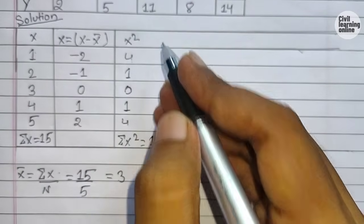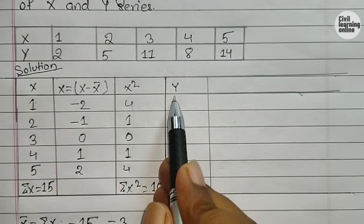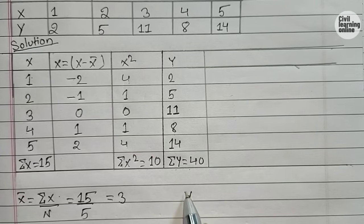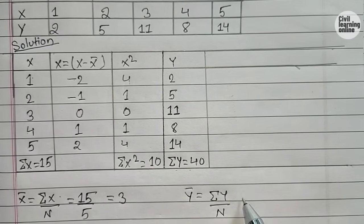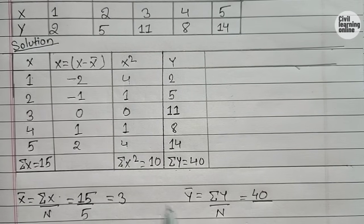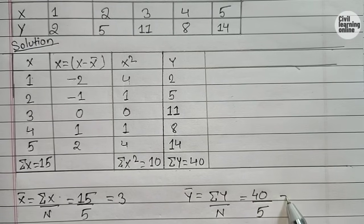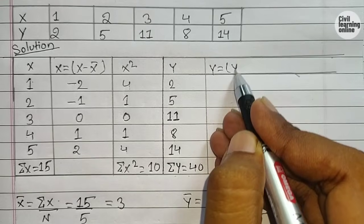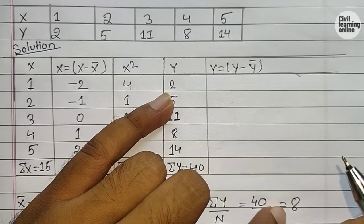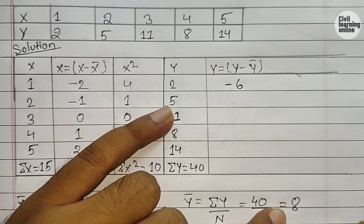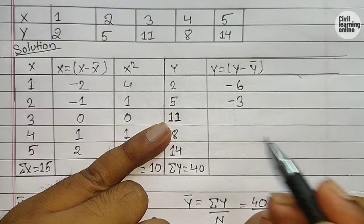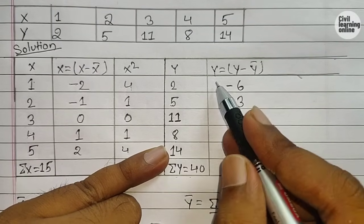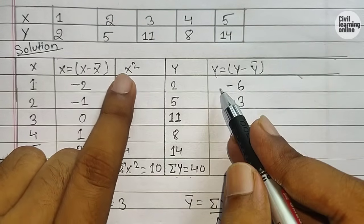After calculating x squared, now for the elements of y. The value of summation y has been computed. Calculate the mean of y: ȳ equals summation y divided by n, which gives 40 divided by 5, so ȳ equals 8. Now calculate the new value of y: y equals y minus ȳ. Subtracting: 2 minus 8 equals minus 6, 5 minus 8 equals minus 3, 11 minus 8 equals 3, 8 minus 8 equals 0, and 14 minus 8 equals 6.